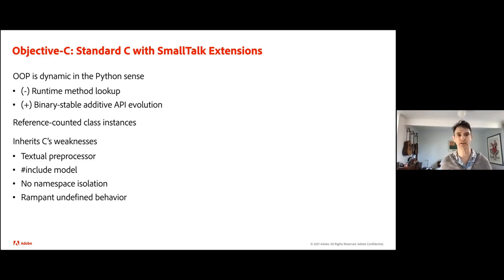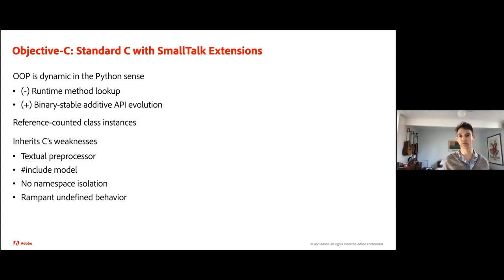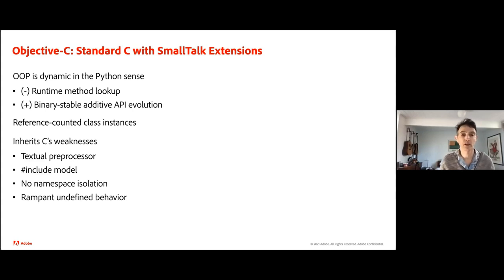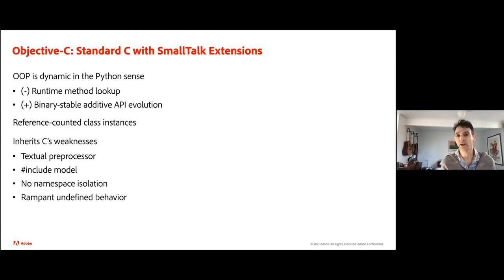Being based on C, Objective-C inherits all of C's weaknesses: the preprocessor, awful macros, the include model, lack of interesting namespace nesting. Standard practice was to add two- or three-letter unique prefixes to all components to distinguish which library they belonged to. And of course, all the undefined behavior of C applies whenever you touch C types like integers and pointers.